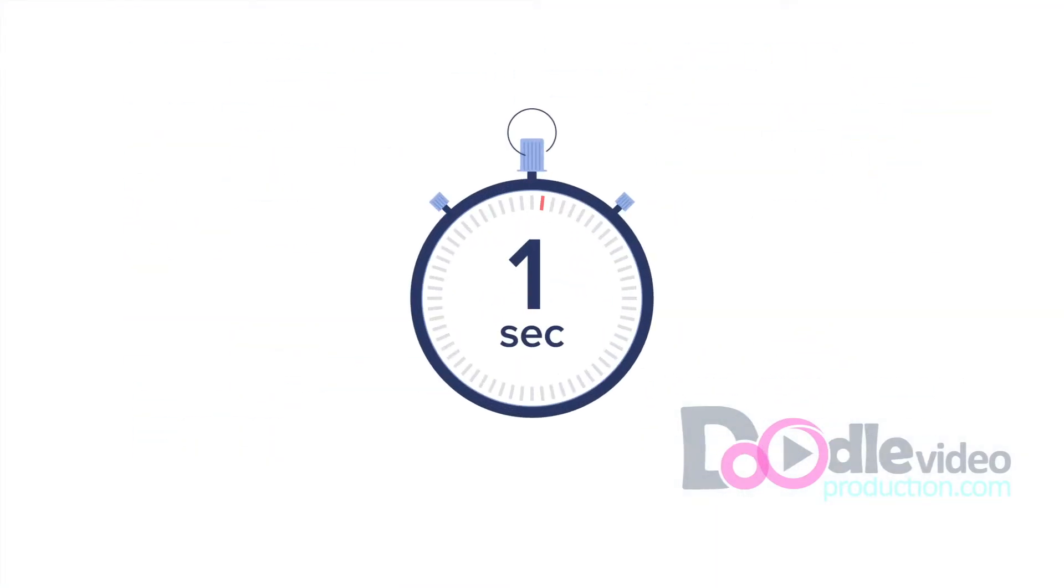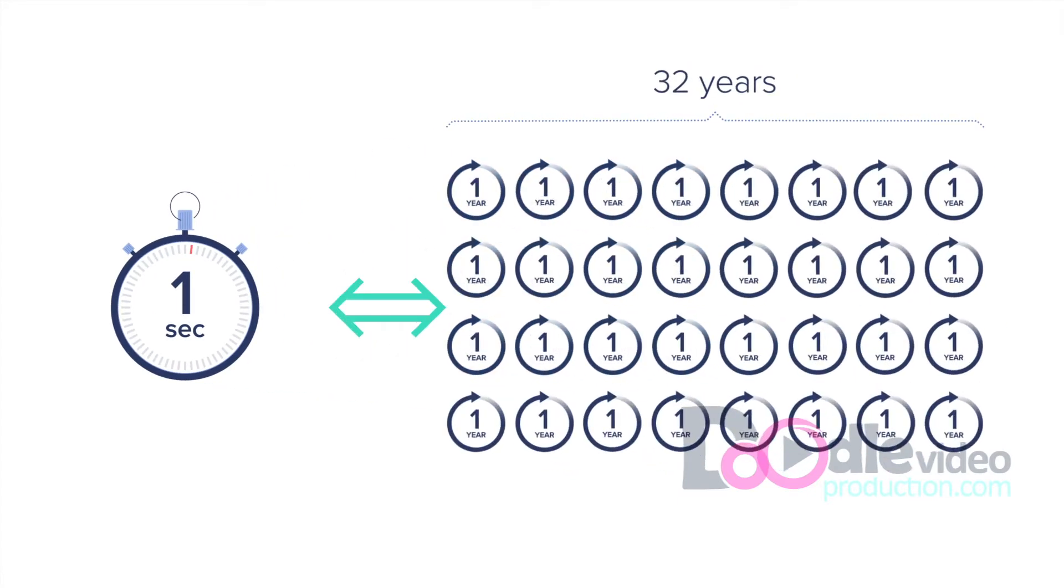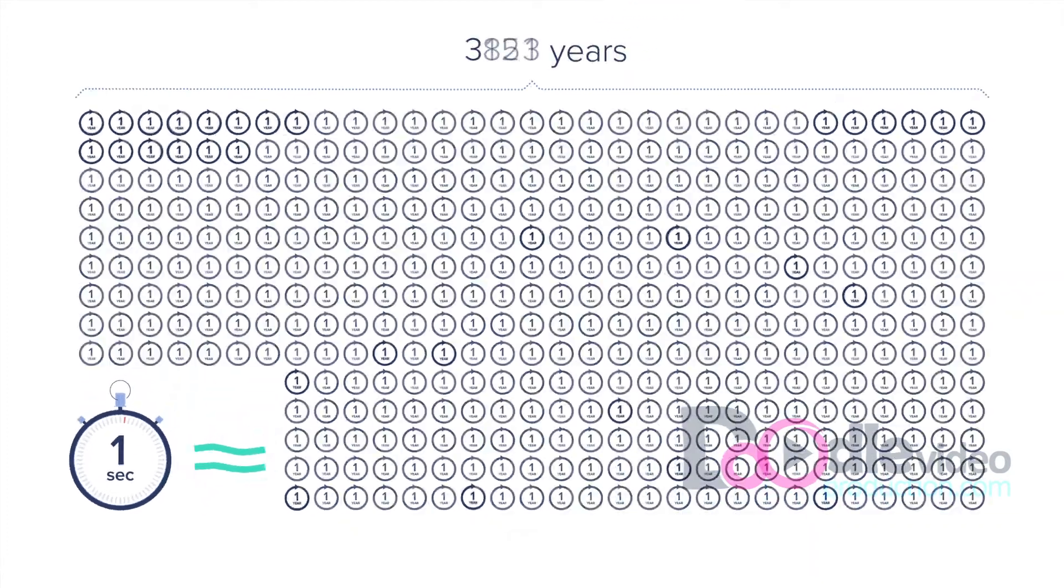In the sense of time, 1 ppm is the equivalent of 1 second in 11 and a half days. 1 ppb is 1 second in 32 years, while 1 ppt is nearly 32,000 years.